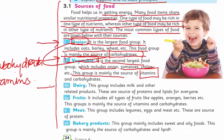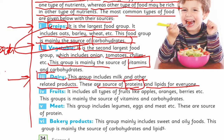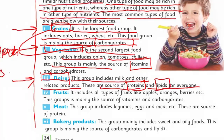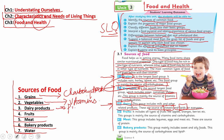Moving on to dairy products — this group includes milk and other related products. These are sources of proteins and lipids. From this group we get two things: protein and lipids, or fats.